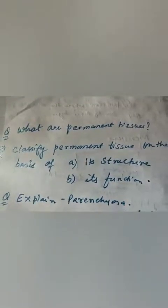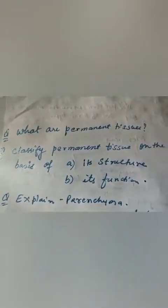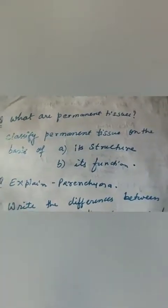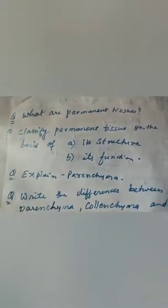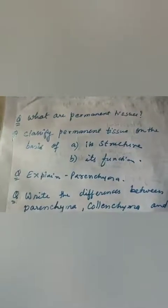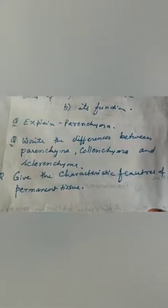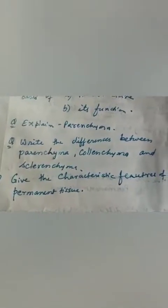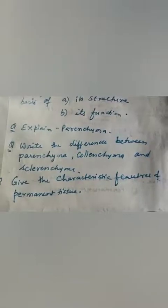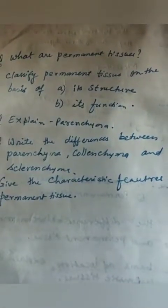Before that, you have to answer certain questions as class work. We will discuss the remaining types in the next video. Questions: What are permanent tissues? Classify permanent tissue on the basis of its structure and function. Explain the term parenchyma. Write the differences between parenchyma, colenchyma, and sclerenchyma. Give the characteristic features of permanent tissues.